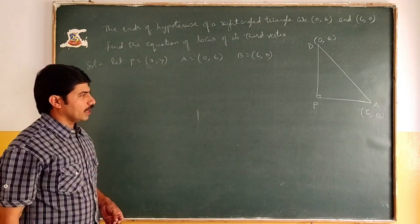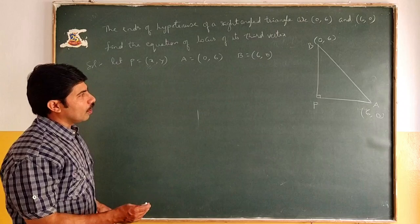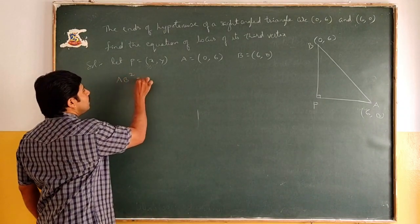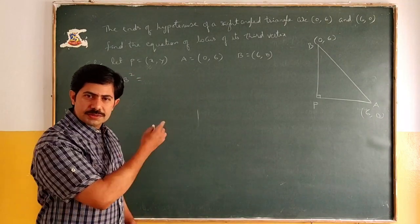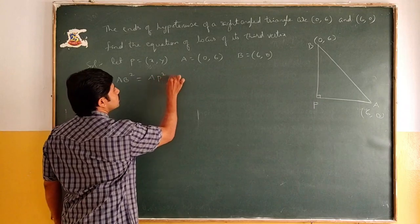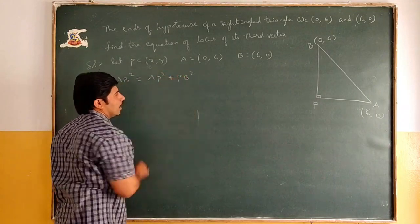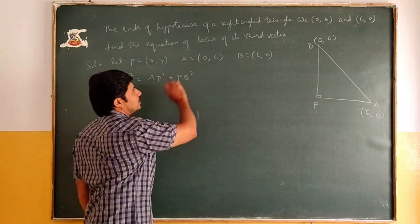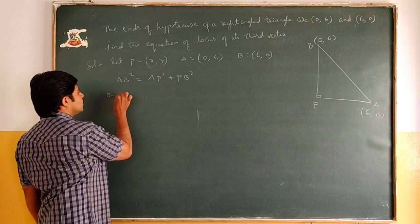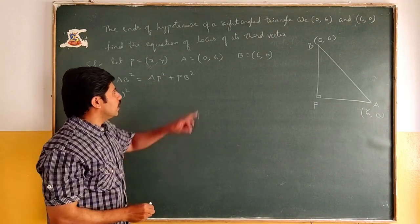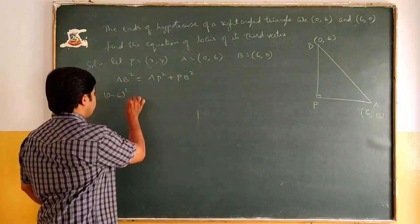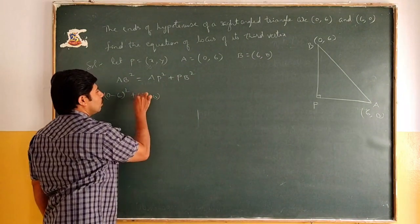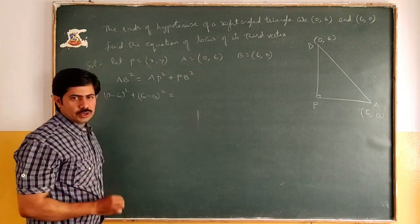According to the right angle triangle, if we apply Pythagoras theorem: AB² = AP² + PB². Now we find the distance between the points. AB² = (0-6)² + (6-0)² = 36 + 36. What is AP? It is (x-0)² + (y-6)².